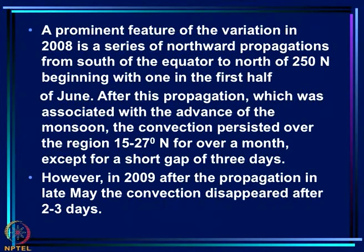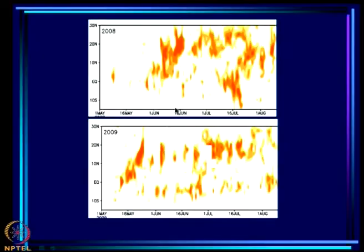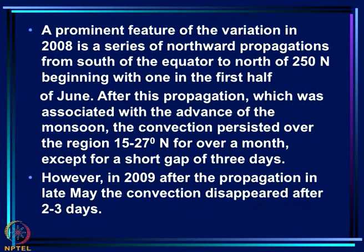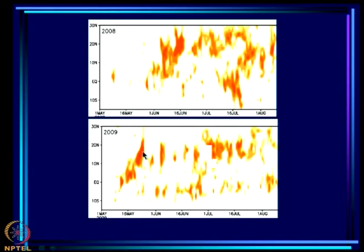A prominent feature of 2008 is a series of northward propagations from south of the equator to north of 25°N beginning in the first half of June. After this propagation associated with the advance of the monsoon, convection persisted over the region 15 to 27°N for over a month except for a short gap of 3 days. However, in 2009, after the propagation in late May, convection disappeared after just 2 to 3 days.